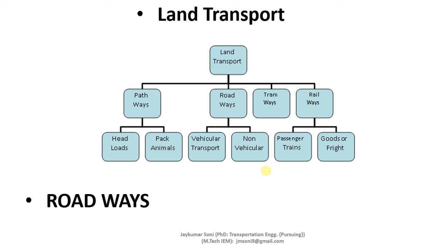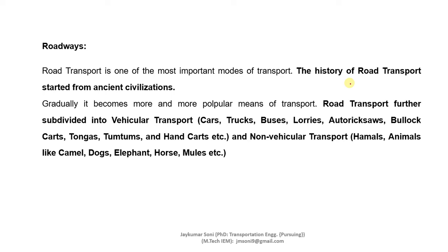The second category is roadways, which can be divided into vehicular transport and non-vehicular transport. Road transport is one of the most important modes of transport, and its history started from ancient civilizations. Vehicular transport involves modes like cars, trucks, buses, lorries, rickshaws, bullock carts, tangas, and hand carts. Non-vehicular transport includes animals like kegs, dogs, and elephants.